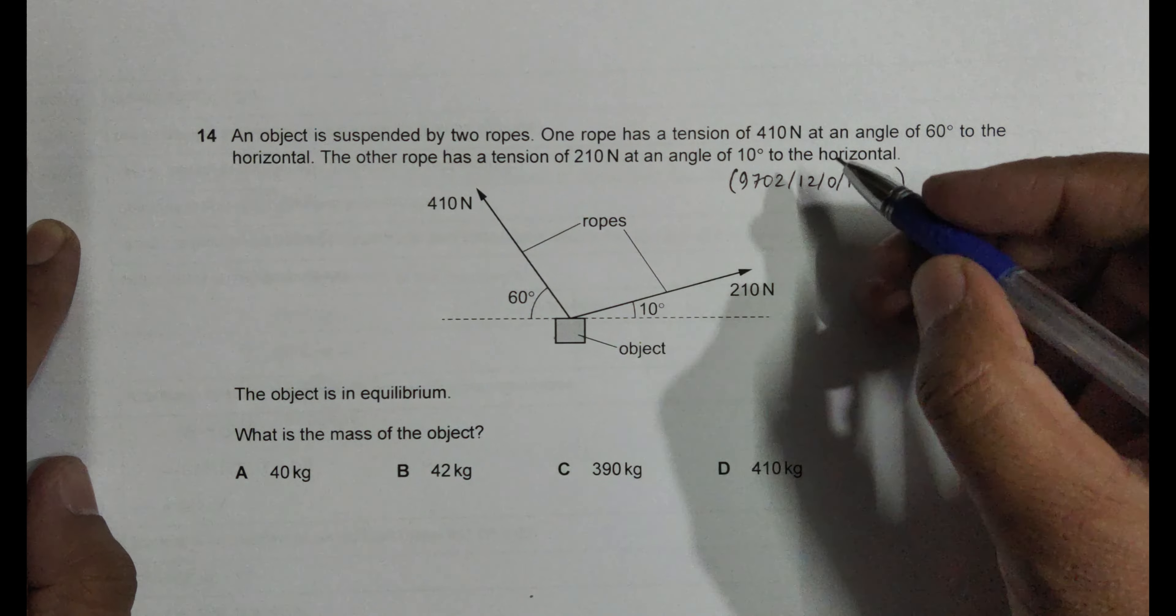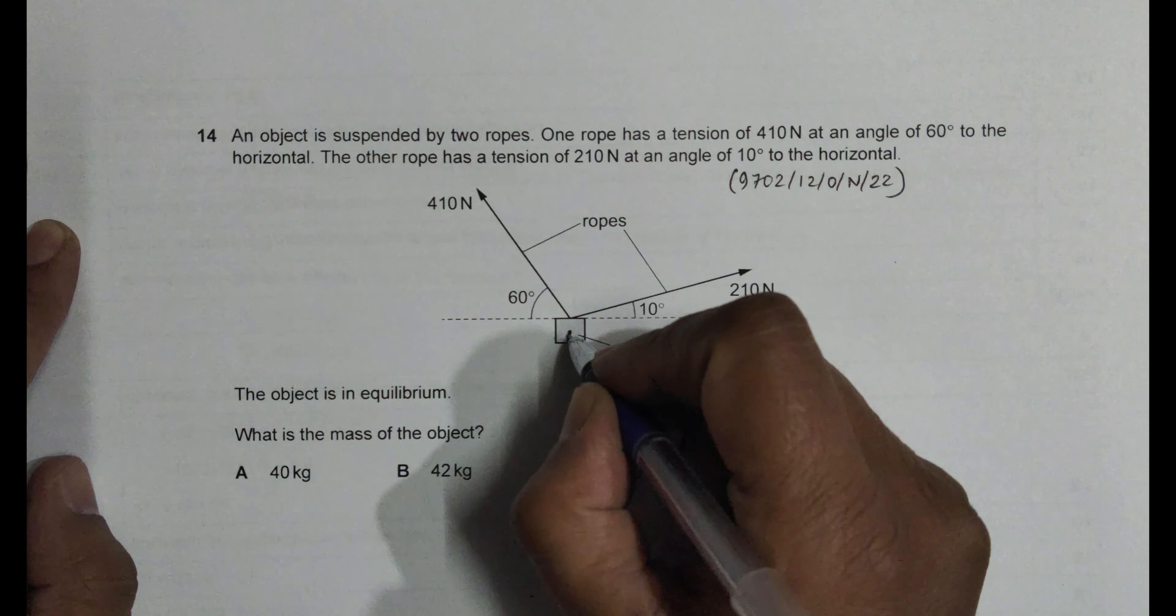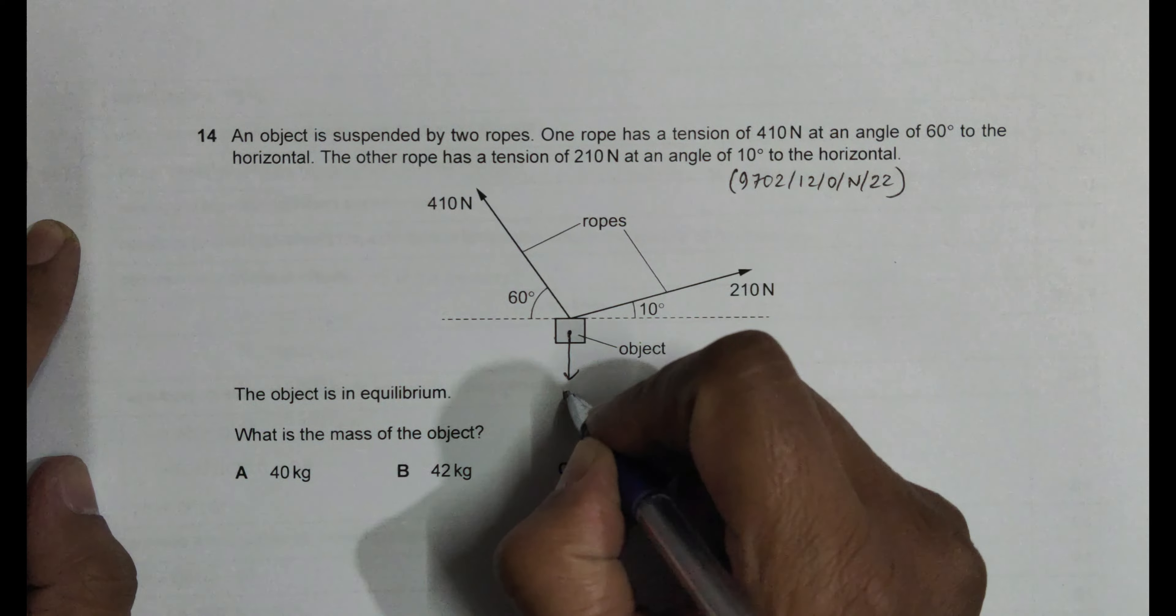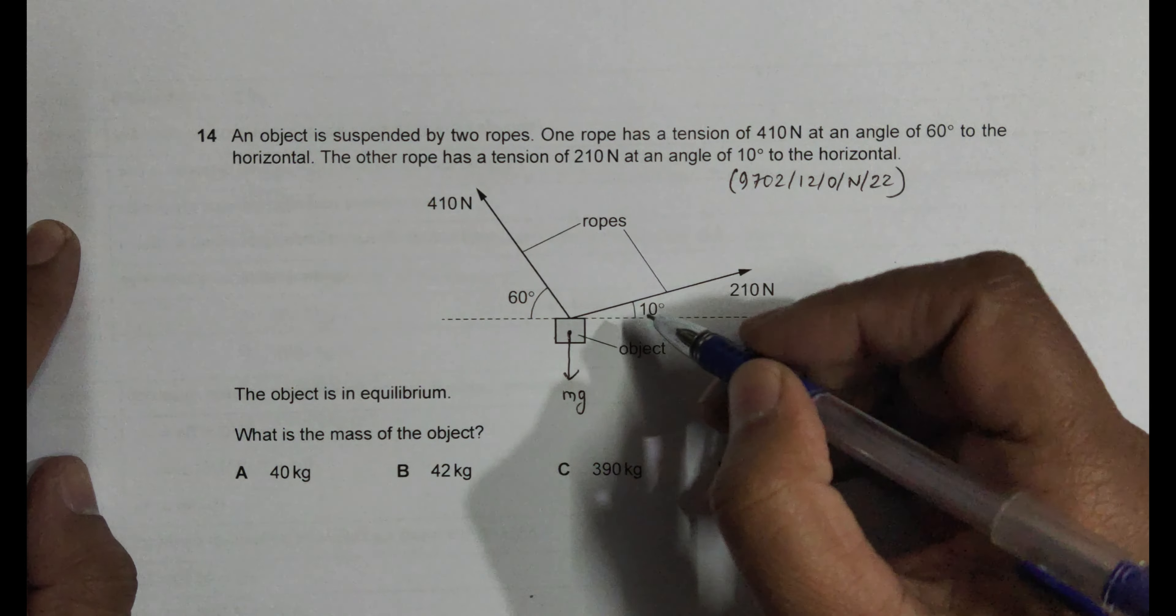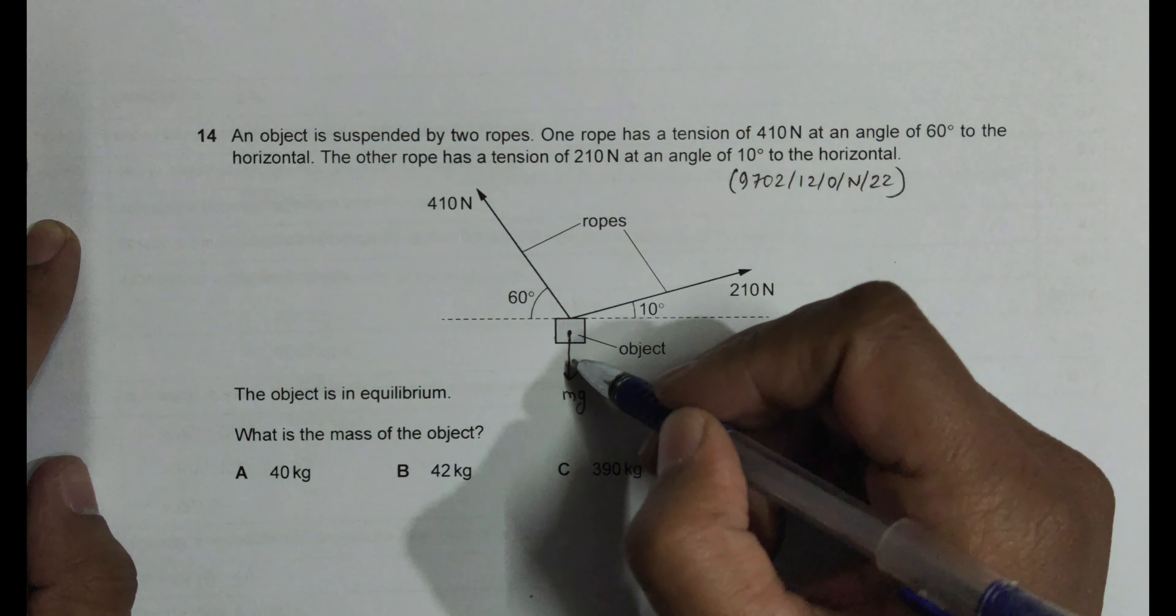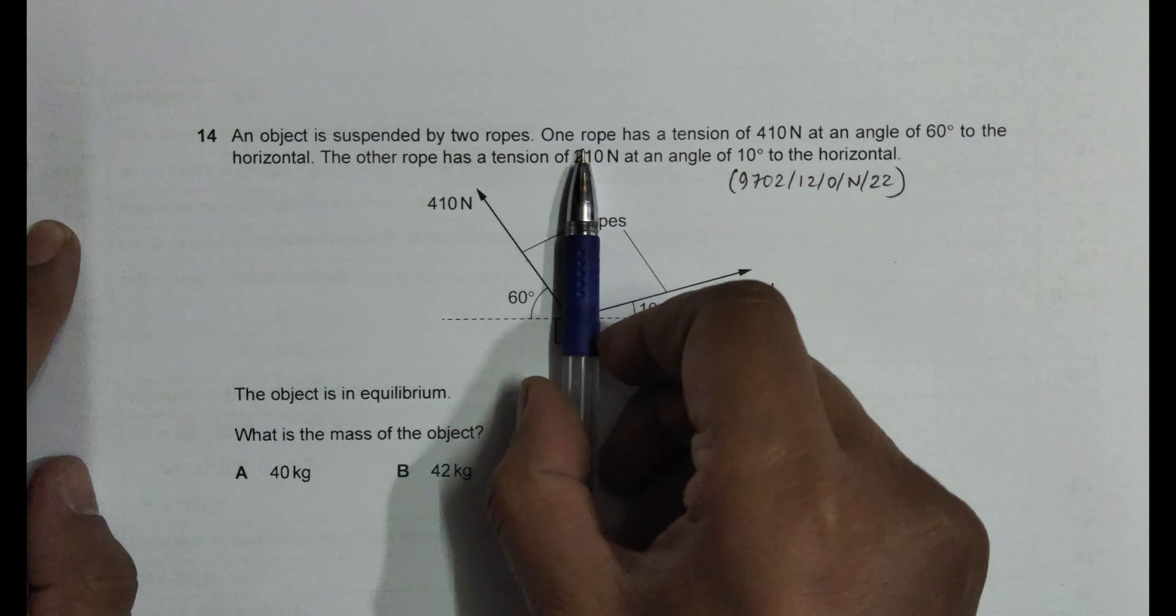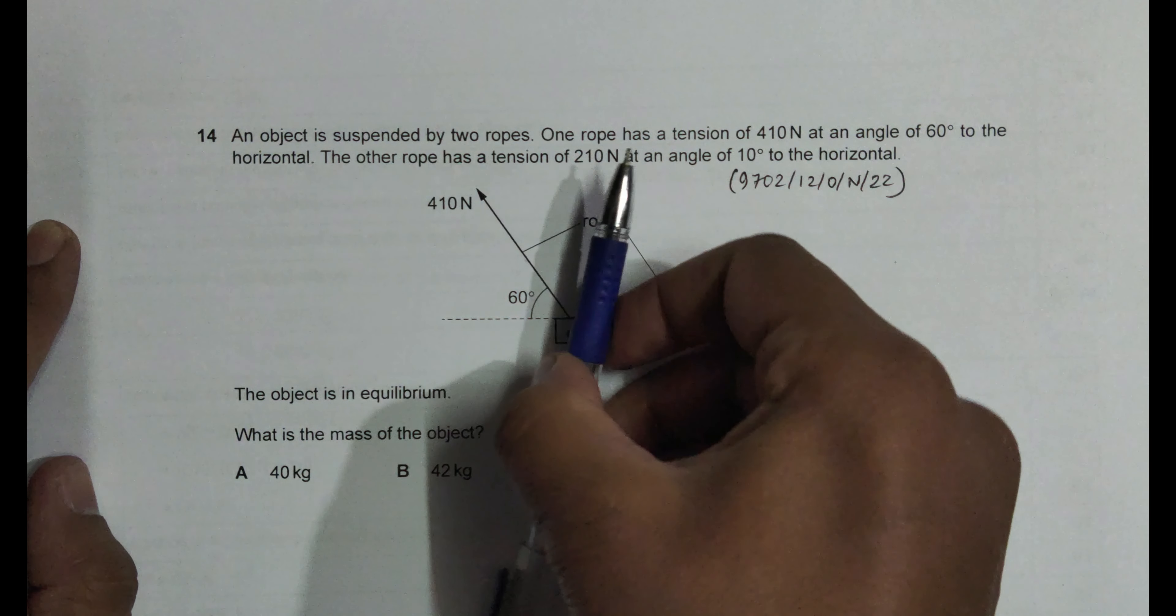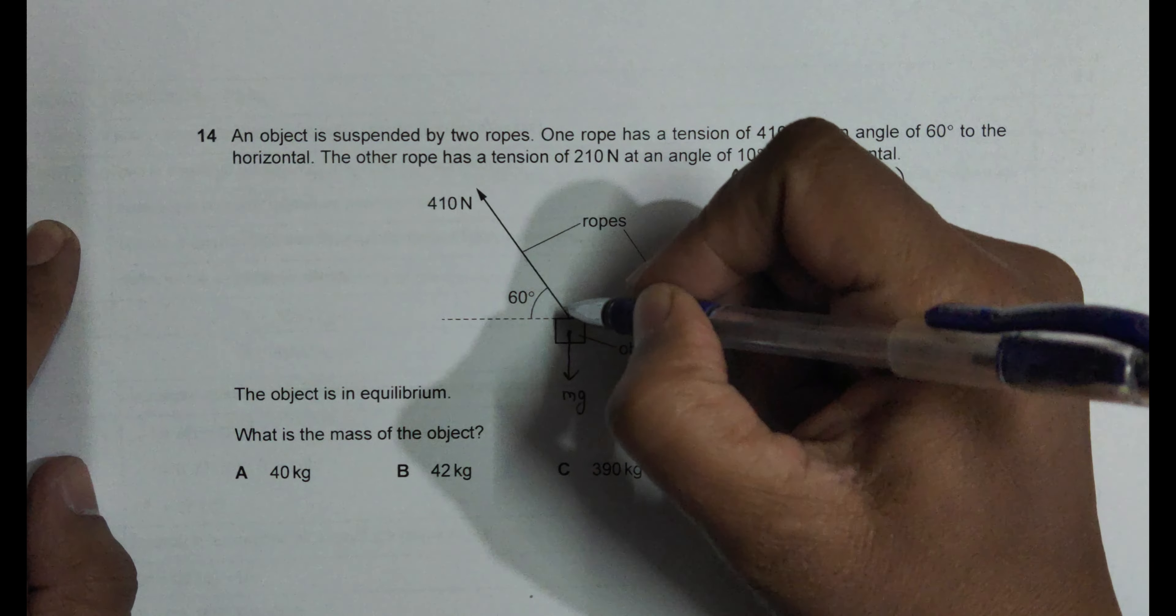Simple as that. For that, what we have to realize is the weight of this body will be acting like this, which is equal to mg. So mass into g. Now what happens here is, since we have to find the mass, let us find its vertical component and also its vertical component.